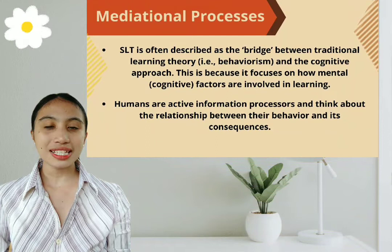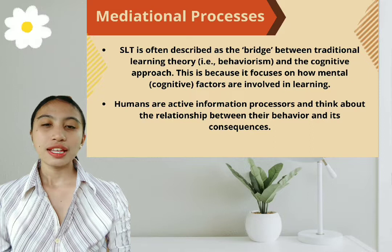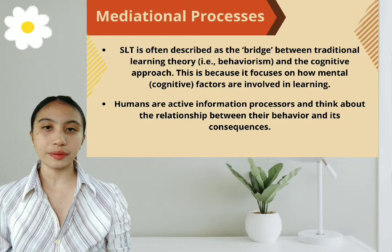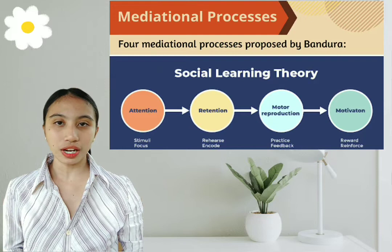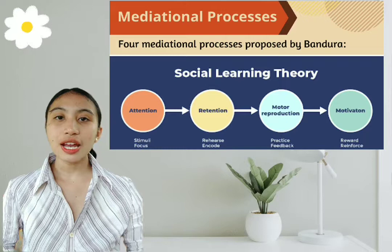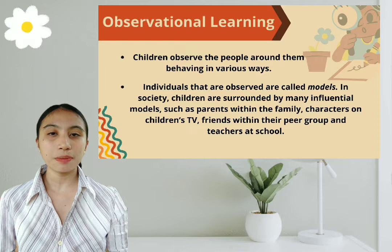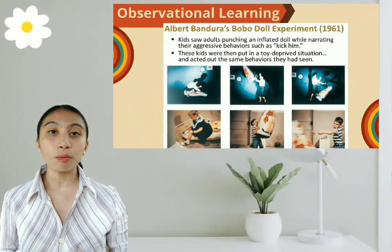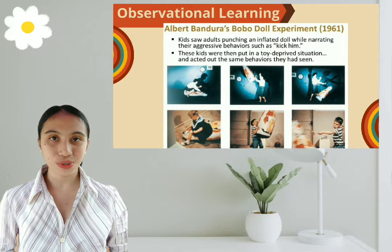Social Learning Theory is often described as the bridge between traditional learning theory and the cognitive approach, because it focuses on how mental factors are involved in learning. The four mediational processes proposed by Bandura are attention, retention, reproduction, and motivation. In observational learning, children observe the people around them behaving in various ways. His famous Bobo Doll experiment illustrates that what children see is what children do.